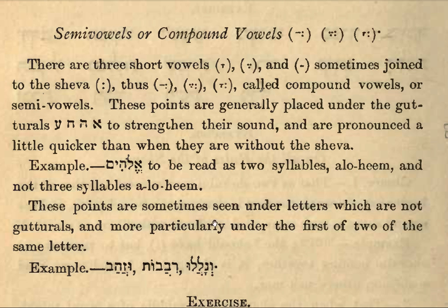These points are sometimes seen under letters which are not guttural, and more particularly under the first of two of the same letter. Here we have some examples: galalu, ribbaboth, huzah.